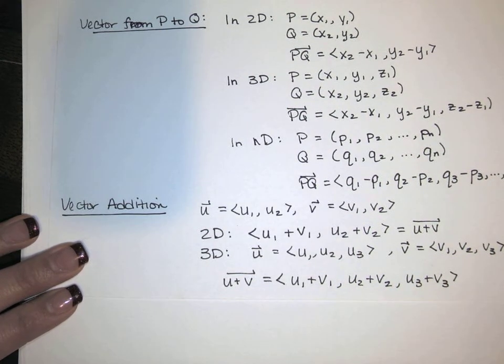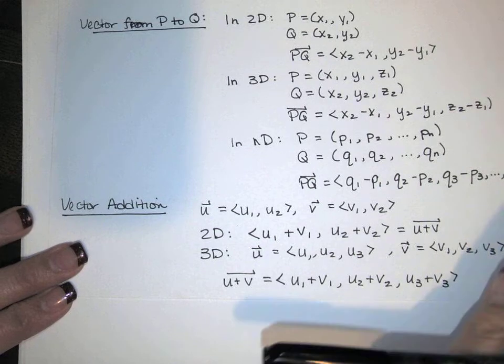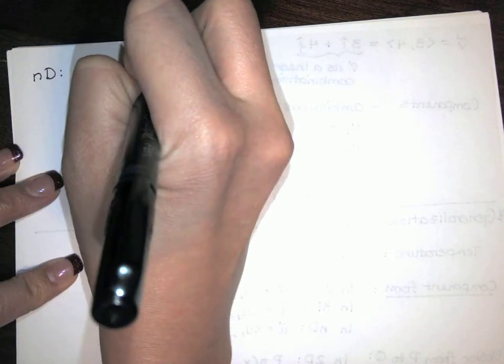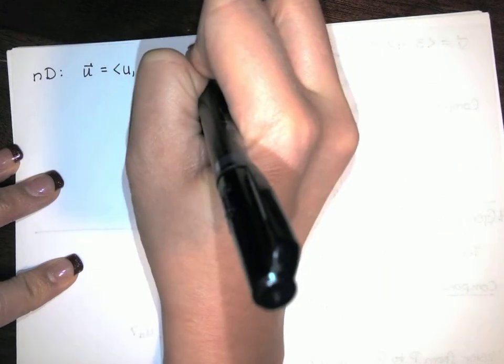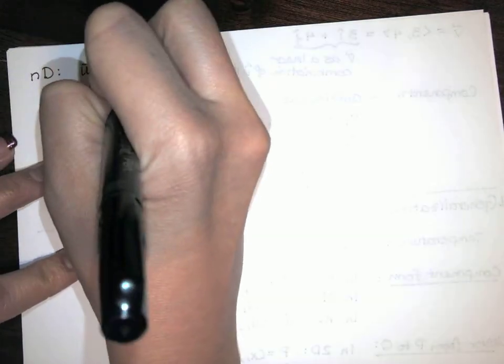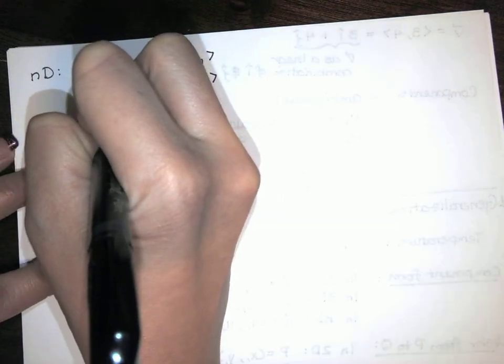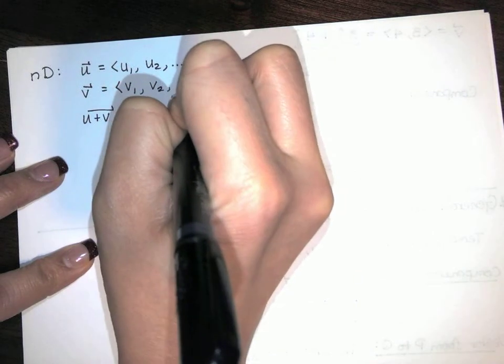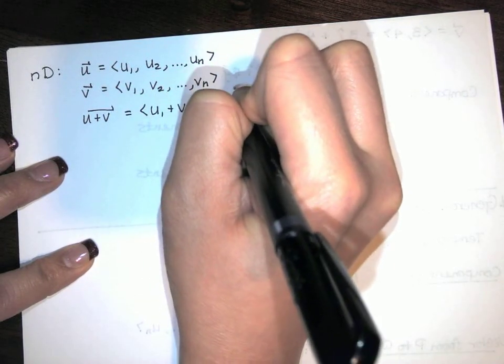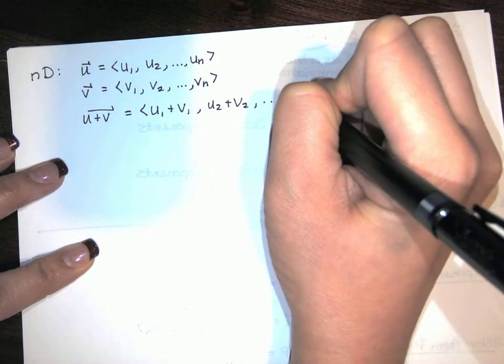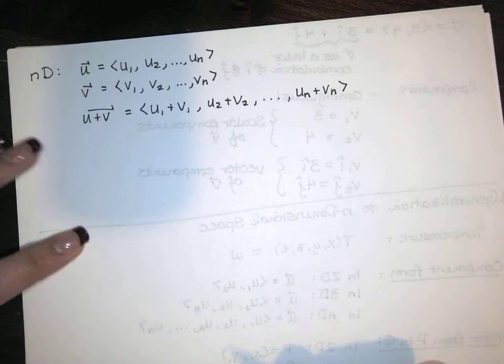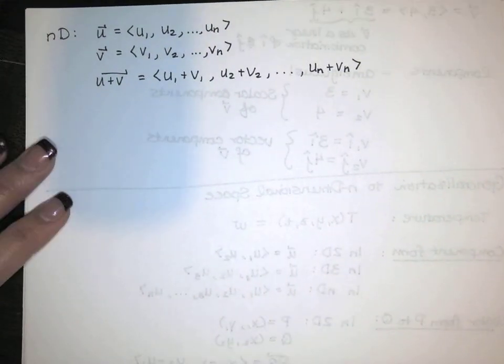You see where this is going? If I'm in nD, my vectors have n components. So I go u1, u2, all the way up to u sub n. And I have v, v1, v2, all the way through v sub n. And when I add them, I get u1 plus v1, and u2 plus v2, and u3 plus v3. And I keep going until I get u sub n plus v sub n. Totally fine. All the math works out just fine.